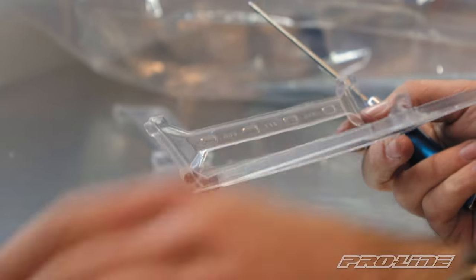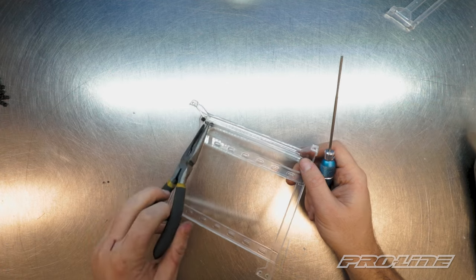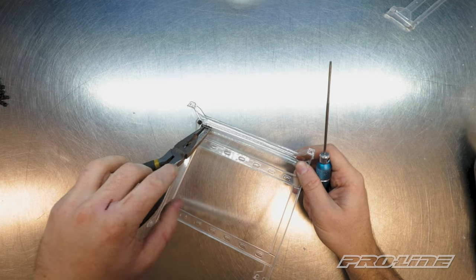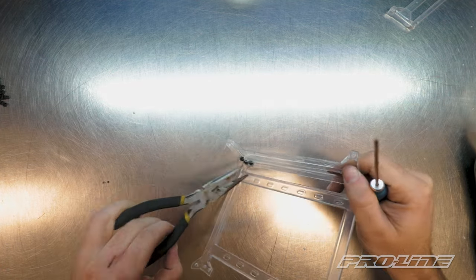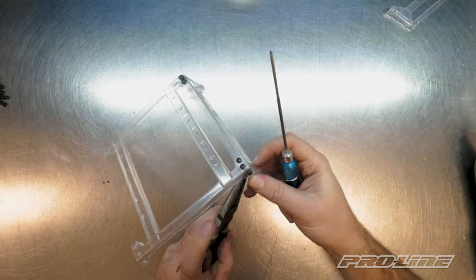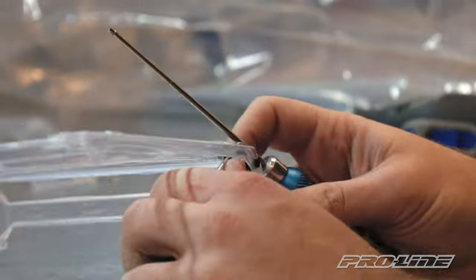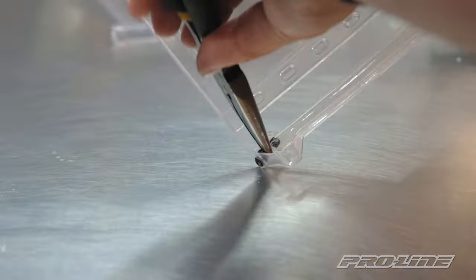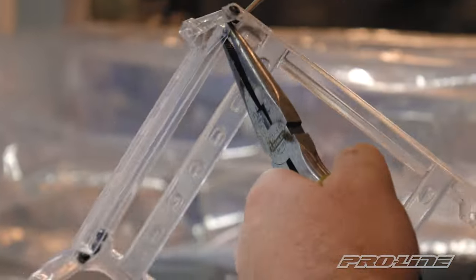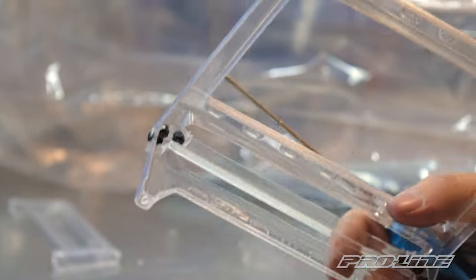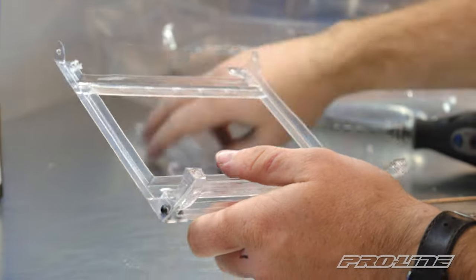Now that we got all six screws in, we're just going to go ahead and tighten them down. Just snug, not too tight because we don't want the screw to rip through the polycarbonate. We got that all tight and now we're going to move to the next side.